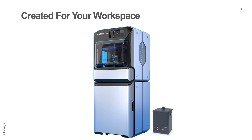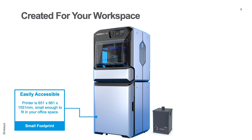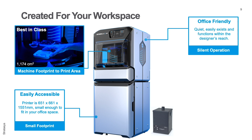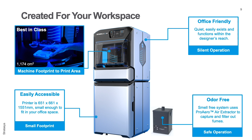The J55 can sit virtually anywhere in your studio, classroom, or office space — it truly has a small footprint. But a small footprint does not mean tiny prints; the footprint to print size ratio is an amazing 1,174 centimeters squared. Equipment noise and smells can also be disruptive to designers' workflows, so the J55 operates nearly silently — the build tray spins and the print head stays static. It's odor-free thanks to the special ProAero air extractor system and the ability to capture and filter out any types of odors.